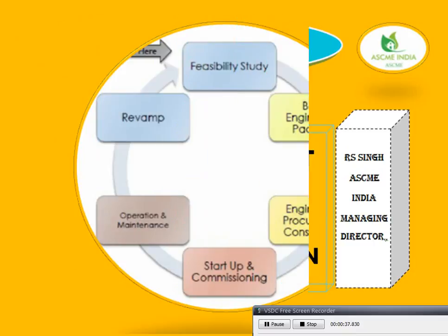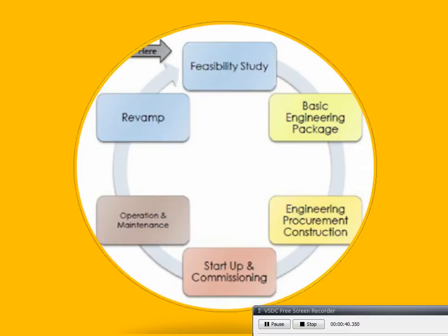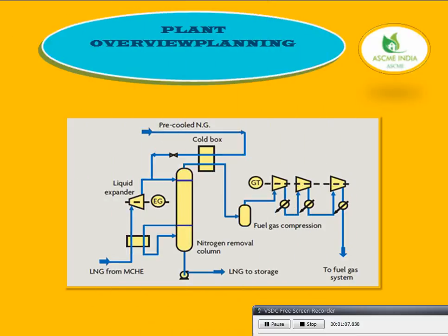Overview of the Plant Engineering Cycle from the process design to operations. We have five categories: plant design and planning. First is a feasibility study. Second is a basic engineering package. Third, engineering, procurement and construction. Fourth, start-up and commissioning. Fifth, operation and maintenance. Sixth, revamp.